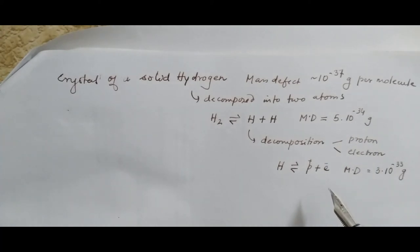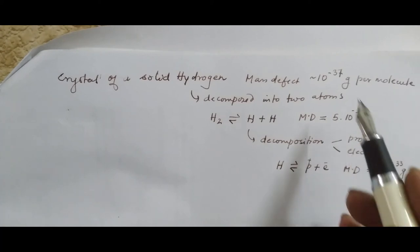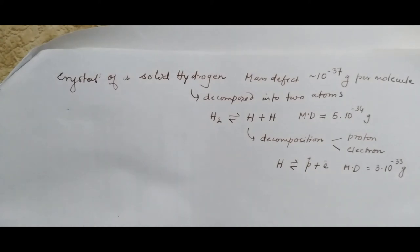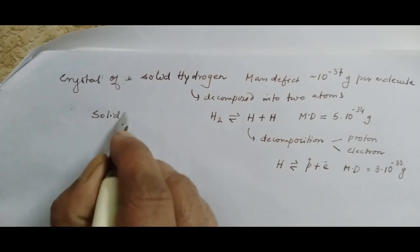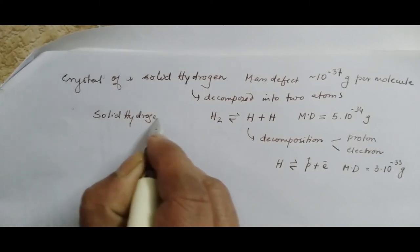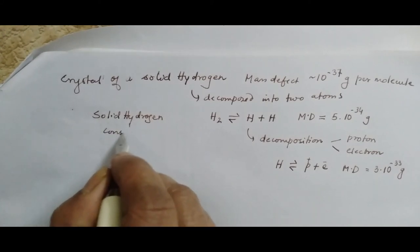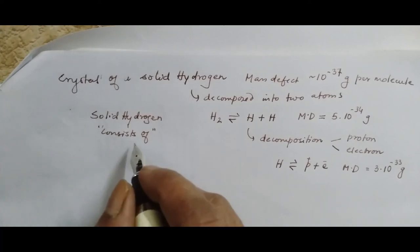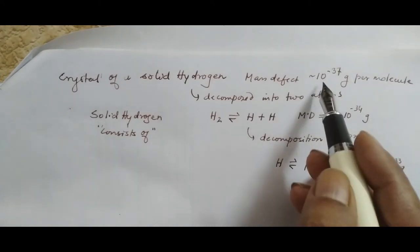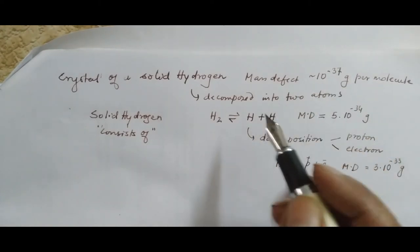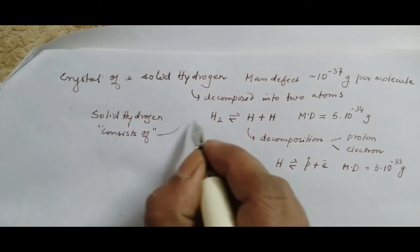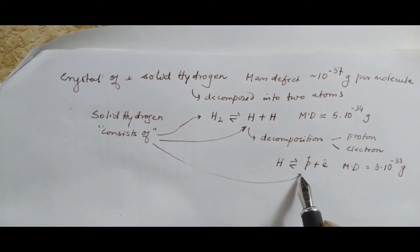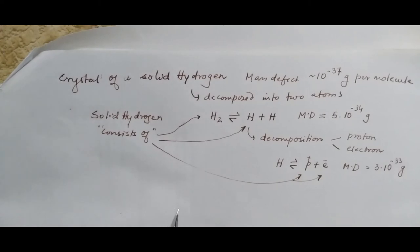This sequence of figures — 10⁻³⁷, 10⁻³⁴, and 10⁻³³ — points to the accuracy of the statement about what solid hydrogen consists of. When the mass defect is 10⁻³⁷ we can say solid hydrogen consists of molecules; when it is 10⁻³⁴ we can say it consists of atoms; and when it is 10⁻³³ we can say it consists of protons and electrons.